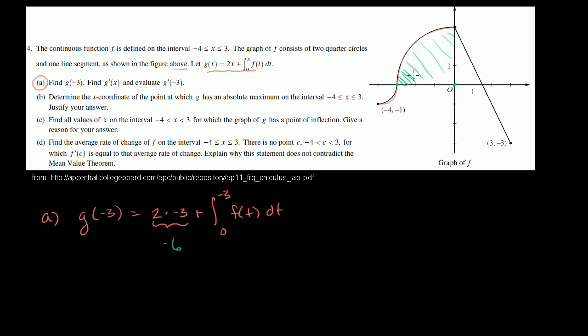Because this area, this area right over here, this would be the integral. Let me do this in a color that you can see. That area right over there would be the integral from -3 to 0 of f(t)dt, or we could either say f(t)dt, or f(x)dx, either way. That would be this area right over here.